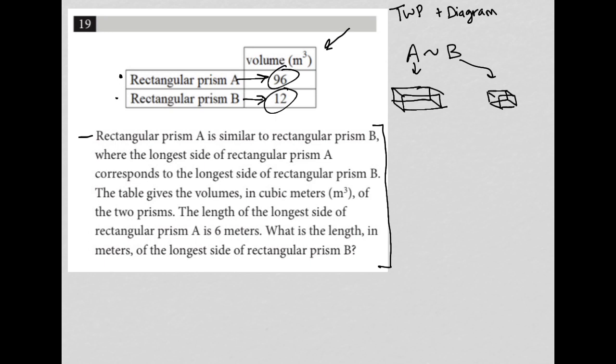And what else do we know? The table gives the volumes in cubic meters of the two prisms. We already saw that. The length of the longest side of rectangular prism A is 6 meters. So I'm going to just label this as 6 for that long side. What is the length in meters of the longest side of the rectangular prism B? So basically we're trying to find that length, so I'm going to label that as X.